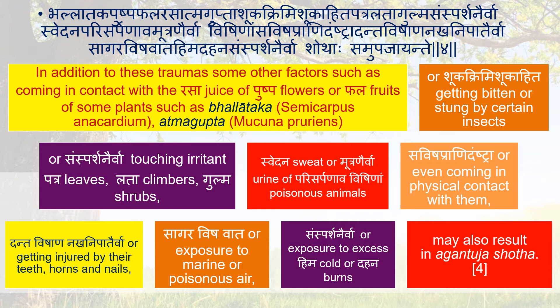Some plants such as Balladaga, Atmagupta or Sugarkrimi, Sugarhida — getting bitten or stung by certain insects. Touching irritant plants like Letha, Playa, Vargulma shrubs. Sweat or urine of poisonous animals (Sarpana Vishina), physical contact with them, or getting injured by their teeth, horns and nails (Danda, Nishana, Naka, Dhibadaihi). Exposure to marine or poisonous air (Savisha Pavana), or exposure to excess heat, cold, or burns may also result in Agantuja Shotha.